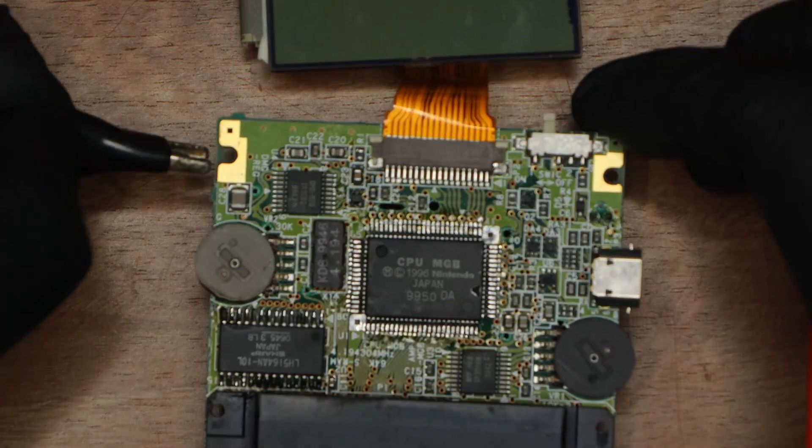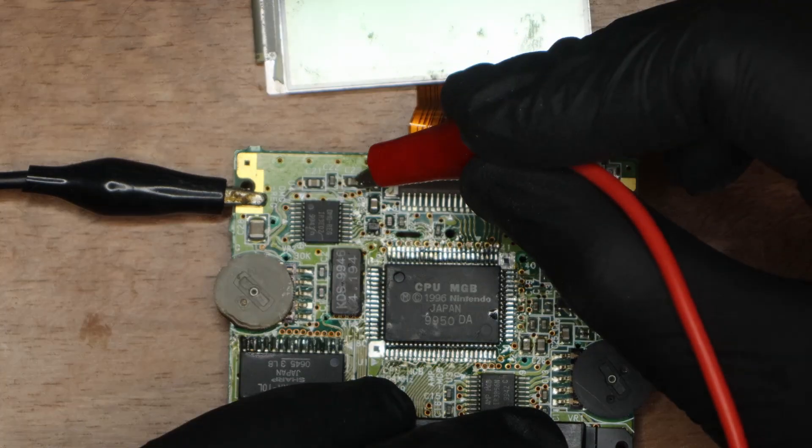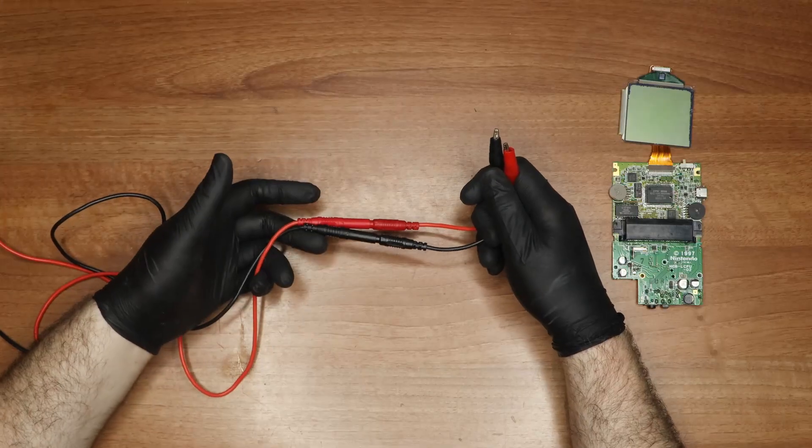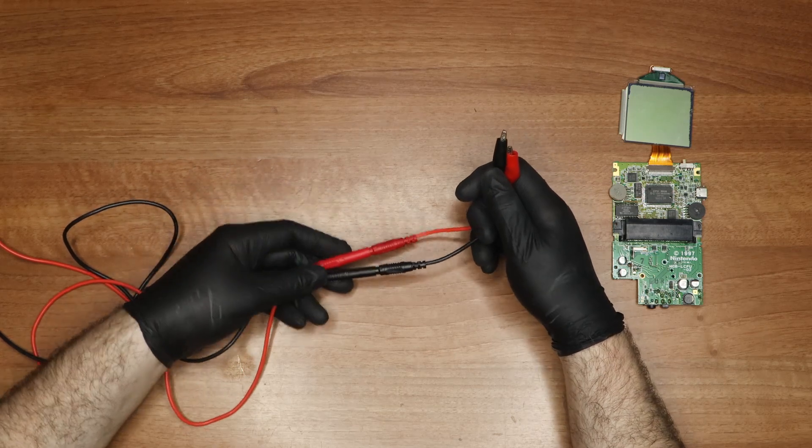When it comes to voltage injection, using crocodile clips can be clumsy, even though it can work. As you can see, it would be very easy to poke the wrong place. Additionally, replacing an entire wire can be reminiscent of those animated shows with numerous tentacles.